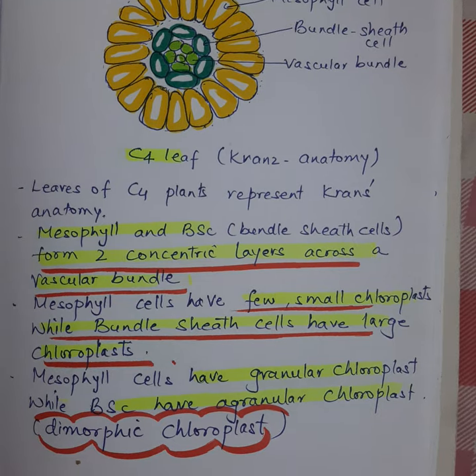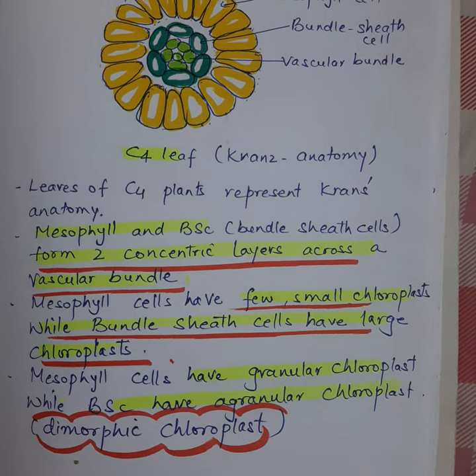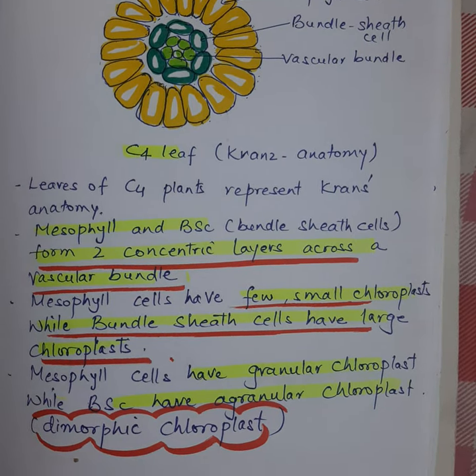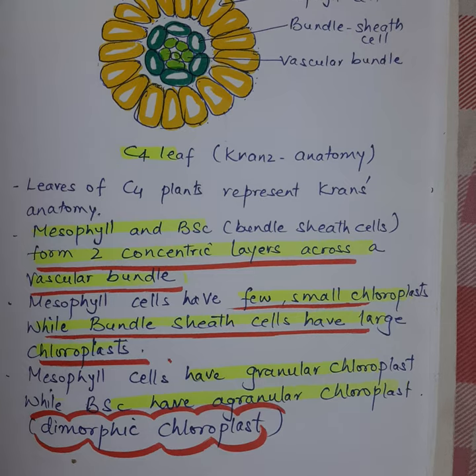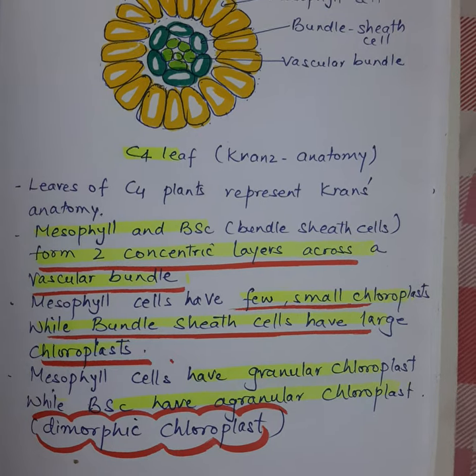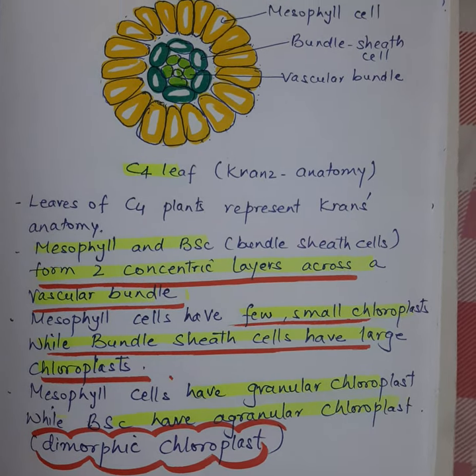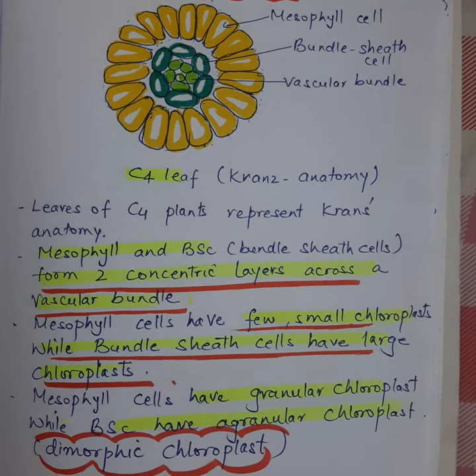Mesophyll cells have granal chloroplasts, while bundle sheath cells have agranal chloroplasts. These are referred to as dimorphic chloroplasts. Thanks, and have a nice day.